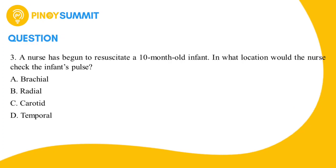Number three: A nurse has begun to resuscitate a 10-month-old infant. In what location would the nurse check the infant's pulse? A) Brachial, B) Radial, C) Carotid, D) Temporal.